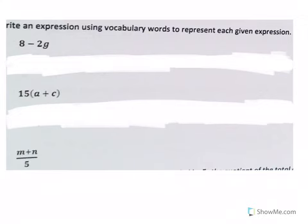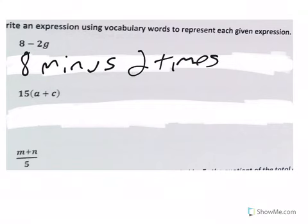Okay. Let's go back. Let's write some more expressions. Here we have 8 minus 2 times G. We could just say 2 times G. We could also say 8 minus the product of 2 and G.